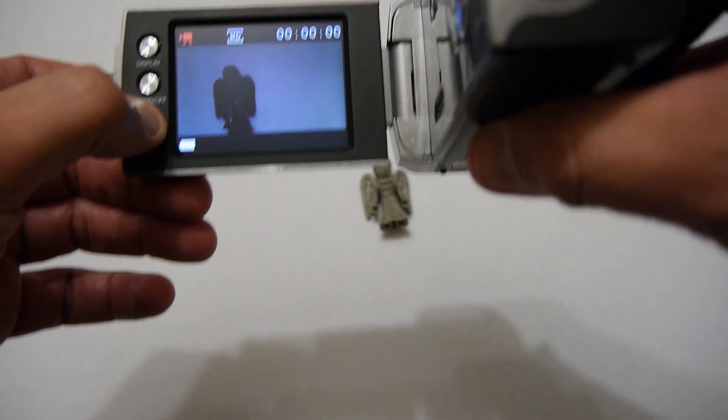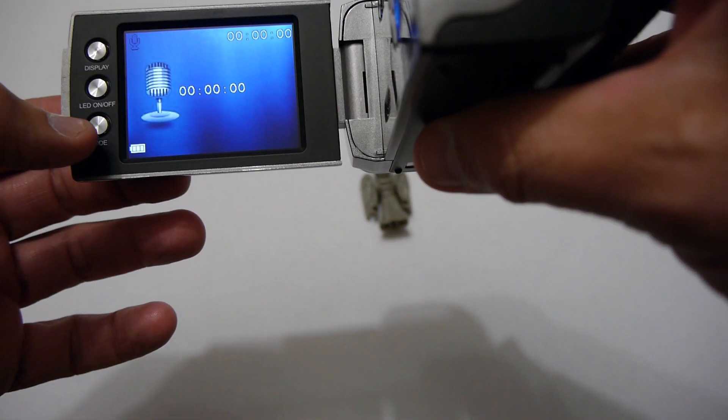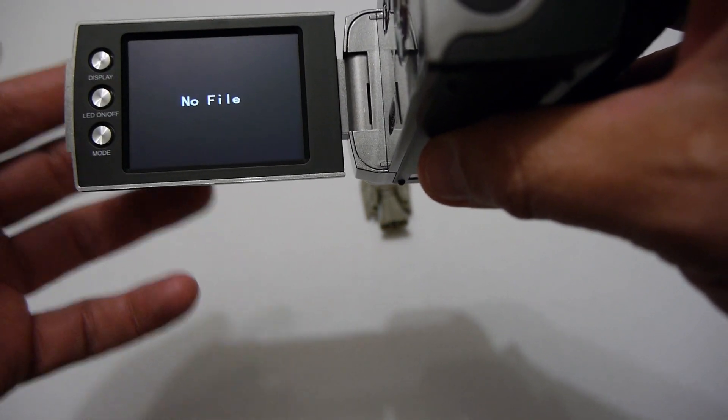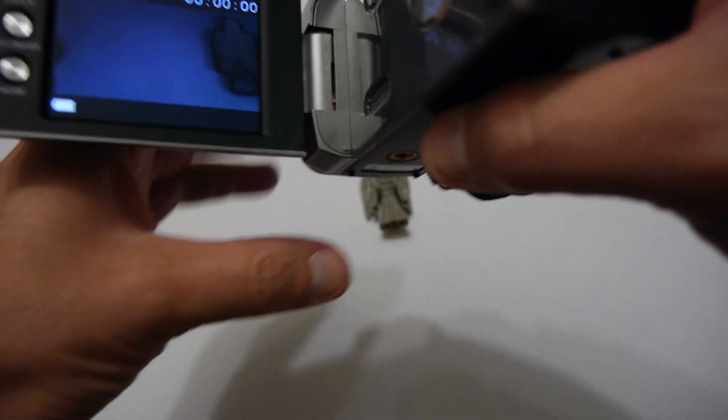Now the button below that is basically just to change the mode. So now we're in still mode and then you've got an audio record mode and then finally you've got a file mode to allow you to play back what you've recorded to the SD card so you can watch it. So we'll go back to video.